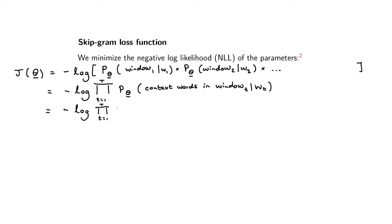Let's now expand this or just expand the notation. We're taking the product from little t equals one up to little t equals big T, and then we've got p of theta. Now we have the context words and I want to denote them explicitly.